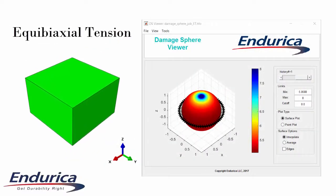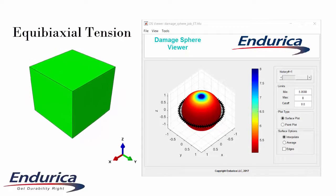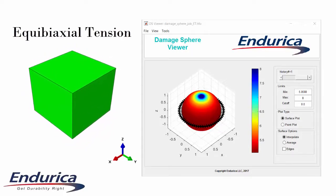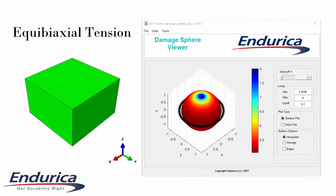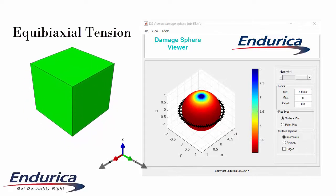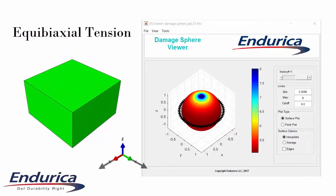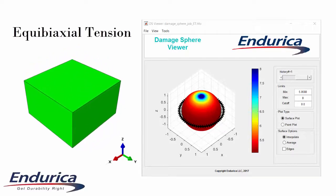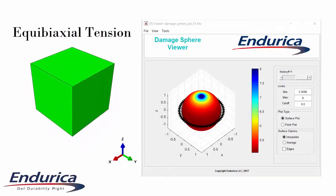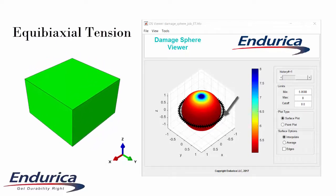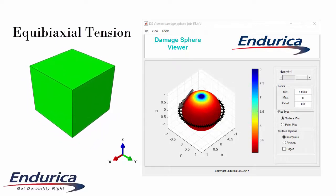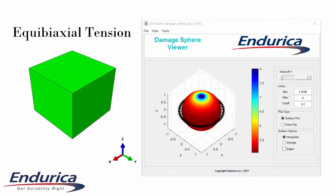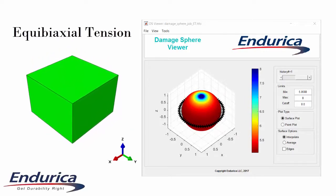Equibiaxial tension has the same deformation mode as simple compression, but the stress state adds a tensile hydrostatic pressure. In this case, the unit cube stretches equally in the x and y directions and the z direction is free. We see from the damage sphere that all planes having a normal vector perpendicular to the z axis are critical planes. Cracks are equally likely to occur in any of these orientations.